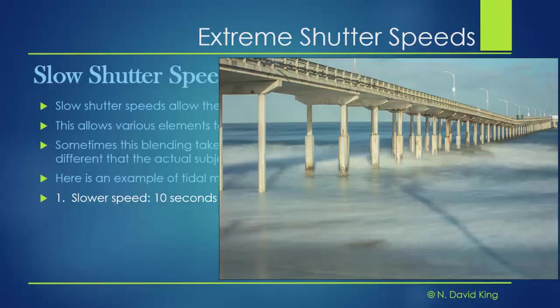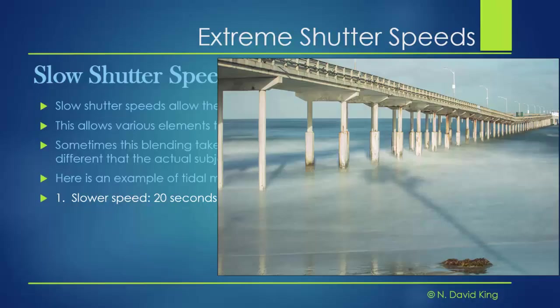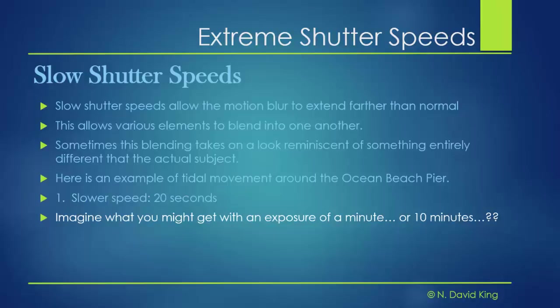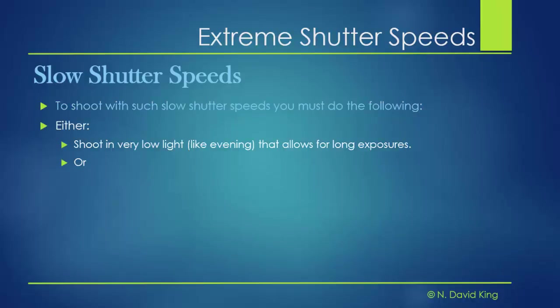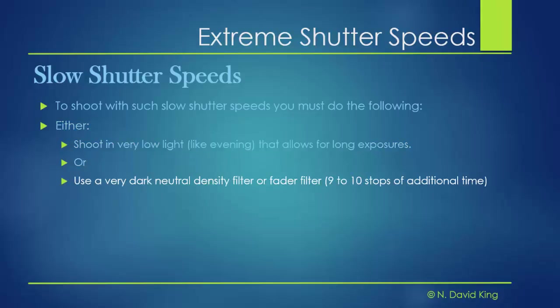What if we change that to 20 seconds? Now things are totally different — a very different look than what we normally see. And suppose we made that exposure a minute, or ten minutes, or an hour. You can imagine what you could get with that kind of look. There are photographers who specialize in very long shutter speed photography. To shoot that way, you need to shoot in very low light like evening light because daylight is just too bright, or you can use a very dark neutral density filter or a fader filter, which can give you nine to ten stops of additional shutter time.